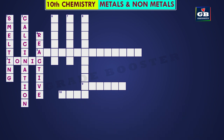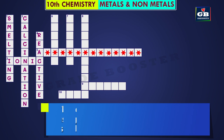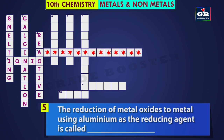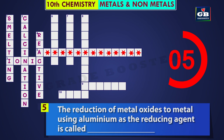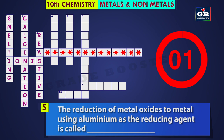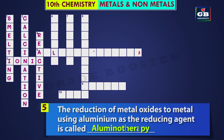Let us see the next one. Fifth across: the reduction of metal oxides to metal using aluminium as the reducing agent is called dash. The answer is aluminotherapy. The reduction of metal oxides to metal using aluminium as the reducing agent is called aluminotherapy.